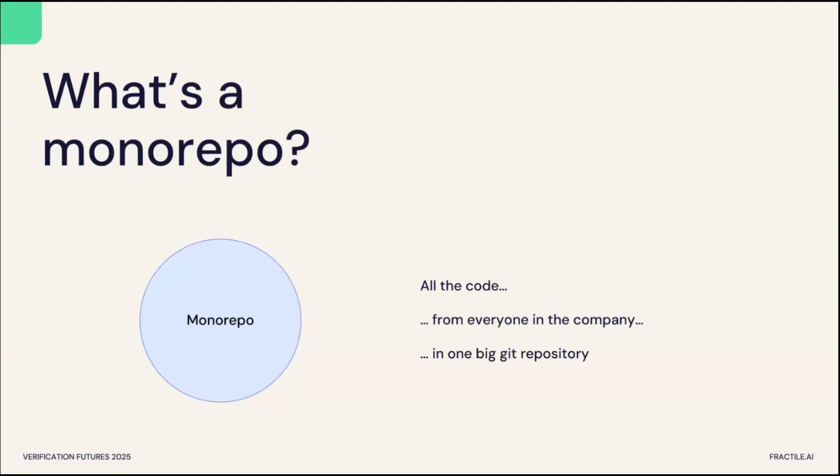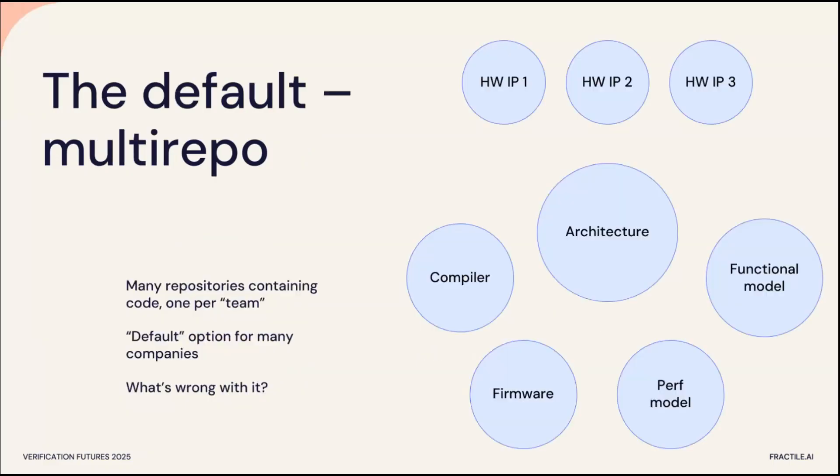So what is a monorepo? Basically, it's all the code from the whole company in one big Git repository. Other providers are available like Perforce or Mercurial, but we're focusing on Git today. It may be helpful to explain the idea of a monorepo by explaining what the default is for most companies, which is a multirepo — no one would call it that, but this is what you tend to build. Each team has its own repository where they put their own code.